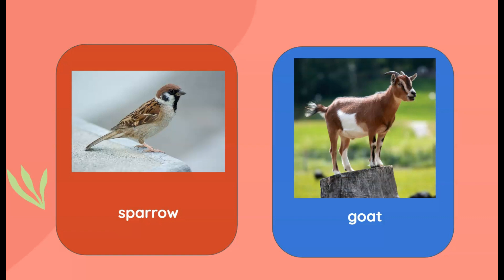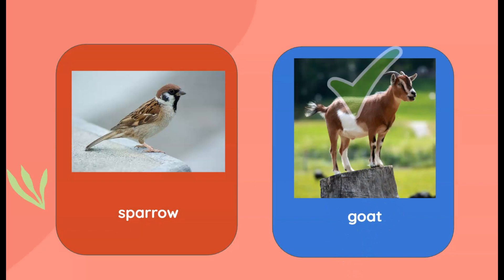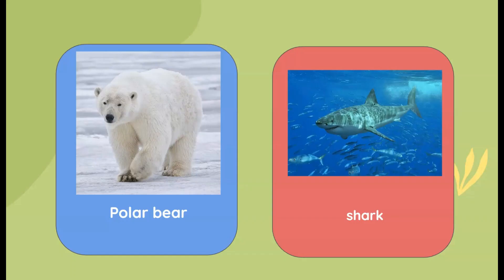It is the goat! Yes, goats have fur on their body. Sparrows have feathers on their body, so sparrows are birds. Which one is the mammal here — is it the polar bear or the shark?